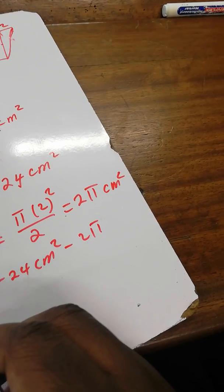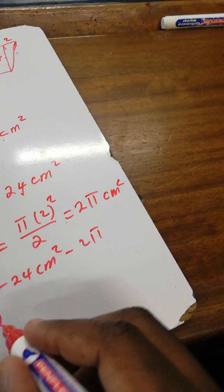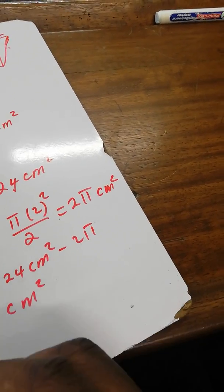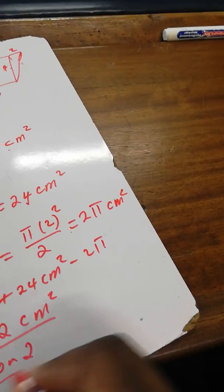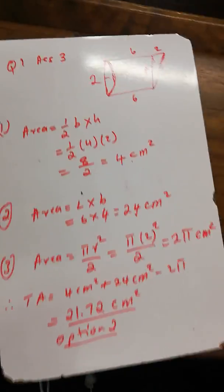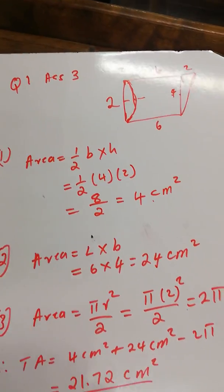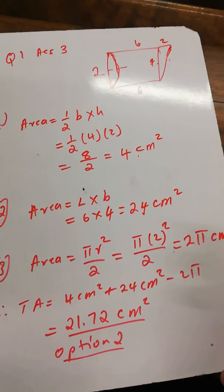When you calculate this, you get option two: 21.72 centimeters squared. So these are the steps you follow. Remember, it's supposed to be centimeters squared, not just centimeters. Thank you.